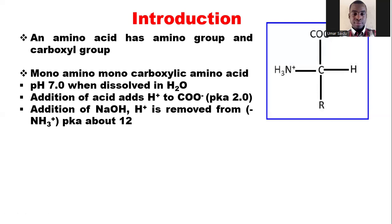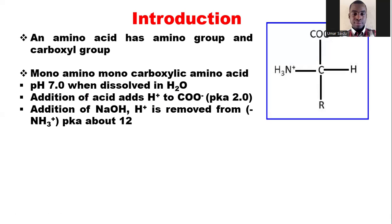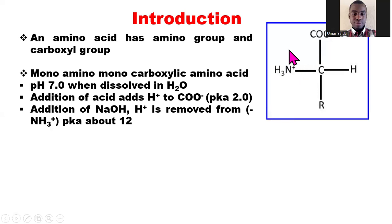Monoamino monocarboxylic amino acids are those amino acids that have one carboxylic acid functional group and one amino functional group. When dissolved in water, they have a pH of seven. If an acid is added, a proton is added to the COO⁻ group, with a pKa of about 2. If sodium hydroxide is added, a proton is indirectly removed from the amino group, with a pKa of about 12.